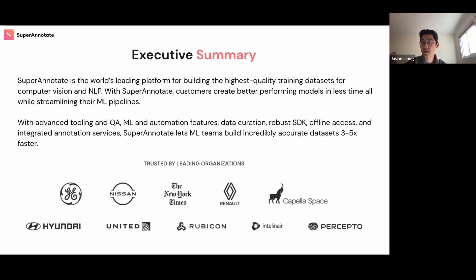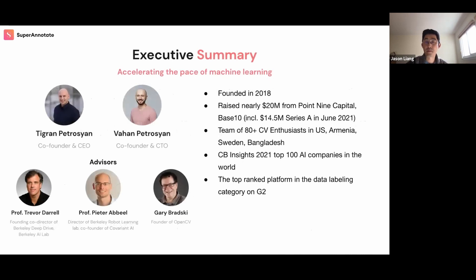We're honored to be working with some of the best companies across so many different industries like robotics, insuretech, retail, automotive, agriculture, just to name a few. The company was founded in 2018 and we've raised nearly $20 million to date from folks such as Point9 and Base10. We were recently named as one of the top 100 AI companies in the world by CB Insights, and one of only three in the data labeling category. We've also got wonderful advisors like Peter Rebeal, Trevor Darrell, and Gary Bradsky.